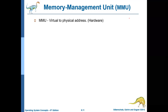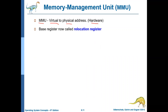So there should be some unit which converts the logical or virtual address to physical address. There are many techniques to do that, but let us see a very basic technique — how the logical or virtual address can be converted to physical or absolute address. This conversion happens through hardware. There is a hardware unit called the Memory Management Unit (MMU) which will do this process.